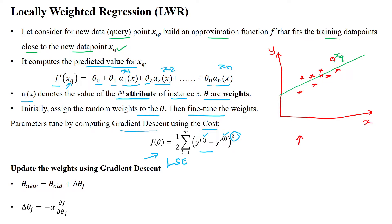Before updating weights using gradient descent, we calculate the cost by computing the distance between all training data points and the query data point xq. Once the total cost of the model for xq is calculated, we update the parameters to reduce the error by applying gradient descent: theta_new = theta_old + alpha * (partial derivative of J with respect to theta).